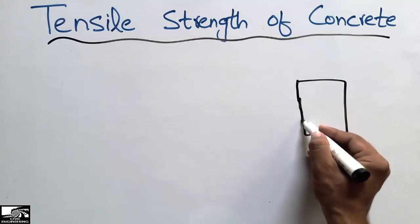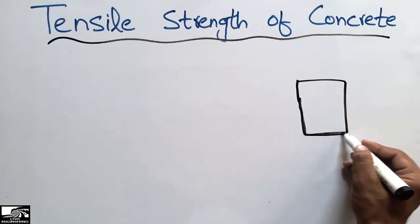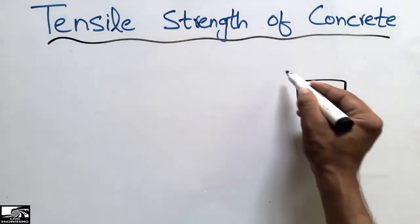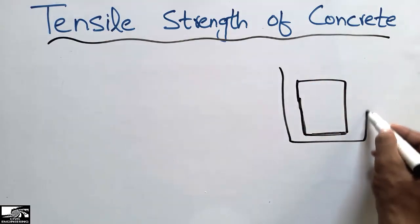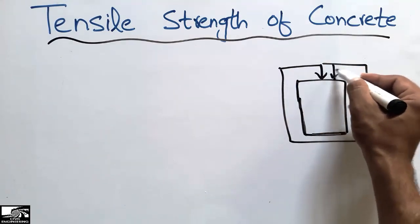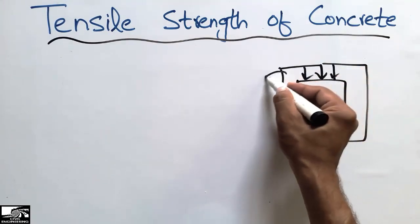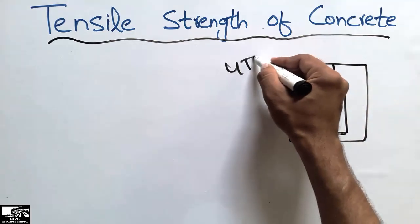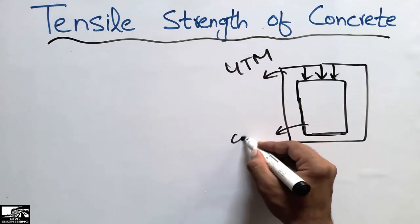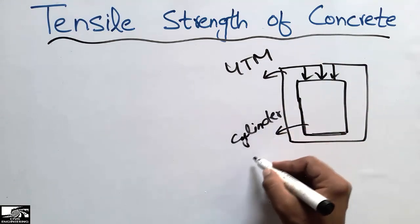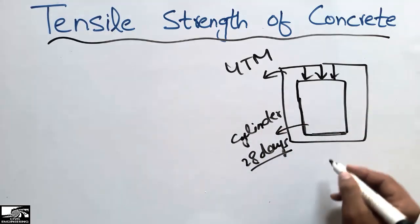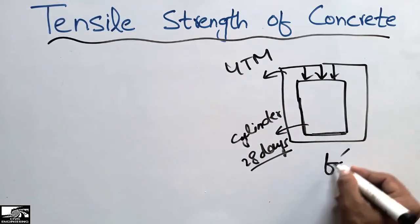After casting the concrete in this cylinder and curing it up to 28 days, we place this cylinder in the universal testing machine and it gives us the compressive strength of the concrete. This is the universal testing machine, and the cylinder is usually placed after 28 days.